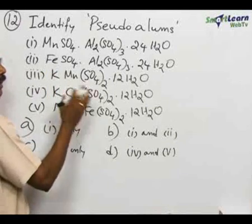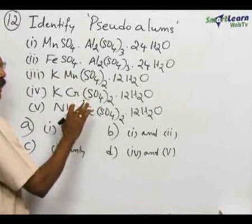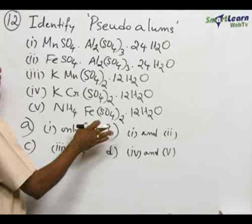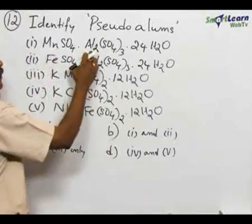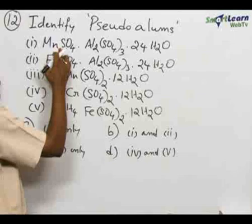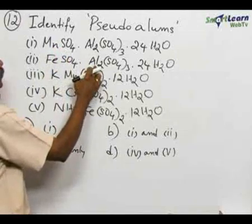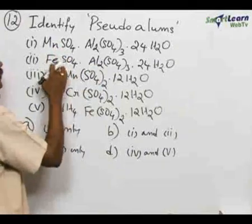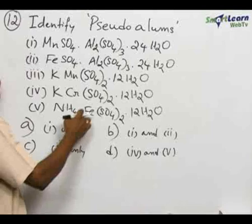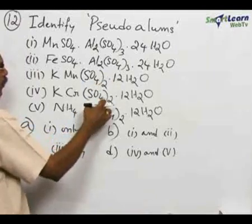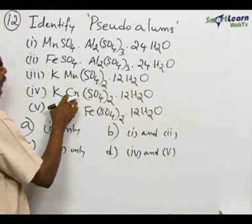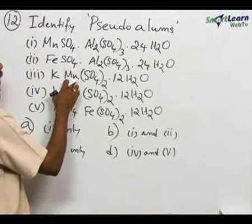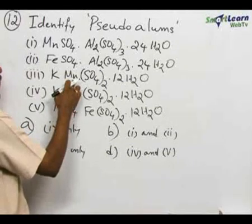For alum, univalent ion and a trivalent ion with sulphate and water molecule must be present. If you analyze MnSO4 Al, here aluminum is trivalent but Mn is bivalent. FeSO4 Al2, here also aluminum is trivalent but iron is bivalent. In all other cases SO4, here potassium is univalent and chromium is trivalent, and here manganese is bivalent.